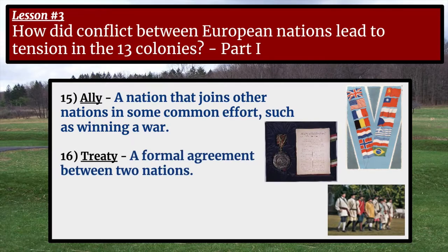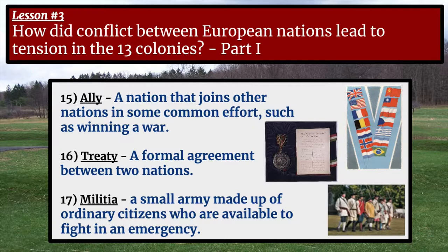A treaty is a formal agreement between two nations. In many cases, when a war is over, there is a treaty that ends the war and sets the conditions that will exist after the war is over. Another term is militia. A militia is an army made up of ordinary citizens who are available to fight in an emergency. Militias are often in small towns and serve as a backup defense force for the army, although sometimes the militia acts in place of an actual army.